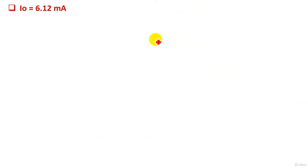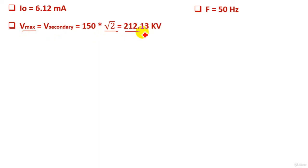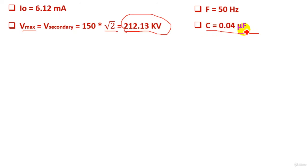For the solution, the given values are: load current I = 6.12 milliampere, supply frequency f = 50 hertz, and the maximum voltage for the Cockroft-Walton multiplier circuit is the secondary voltage of the high voltage transformer — 150 kV — multiplied by root 2 to get the peak voltage, giving Vmax = 212.13 kilovolts. Each capacitance has a value of 0.04 microfarad.